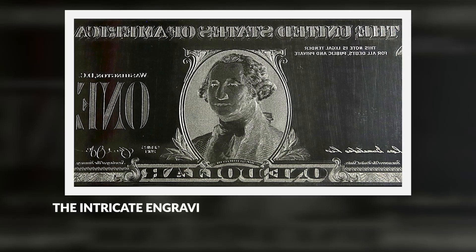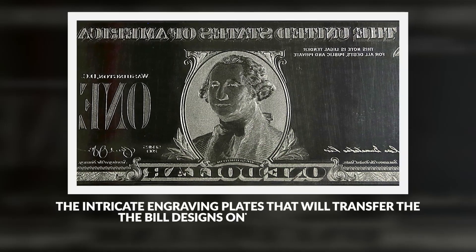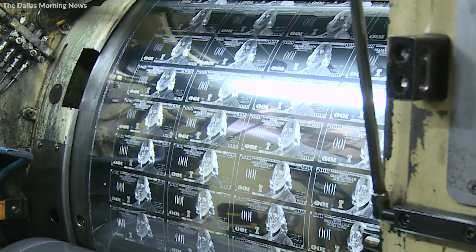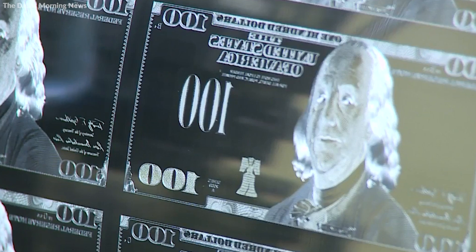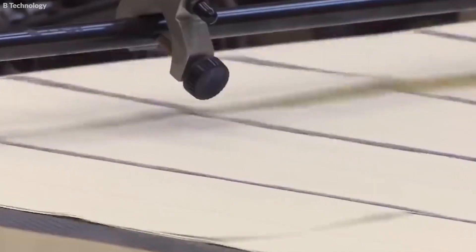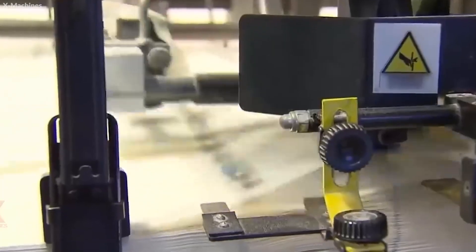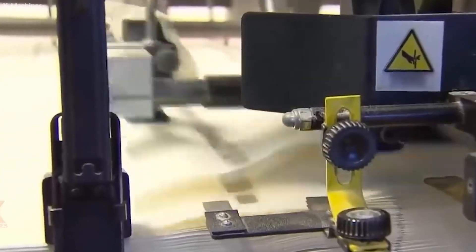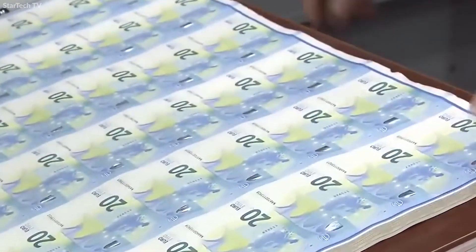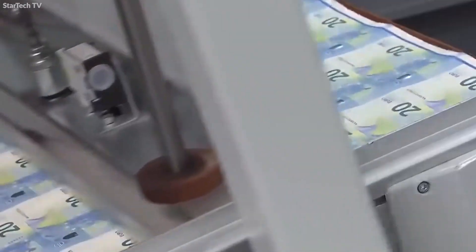Simultaneously, the intricate engraving plates that will transfer the bill designs onto the paper are meticulously prepared. These plates are crafted using a combination of advanced computer-aided design and traditional engraving techniques, ensuring each detail of the bill's design is captured with precision. The preparation phase also involves setting up and calibrating the sophisticated printing presses, which are designed for high speed and precision, adjusted for exact alignment and even ink distribution. This meticulous setup is crucial to achieving the high standards of quality and consistency required in currency printing.